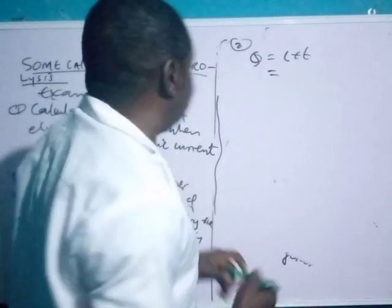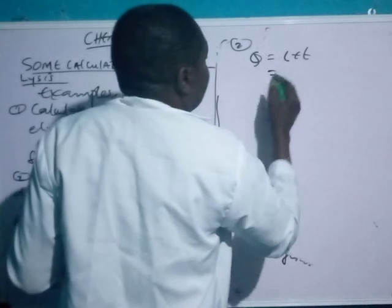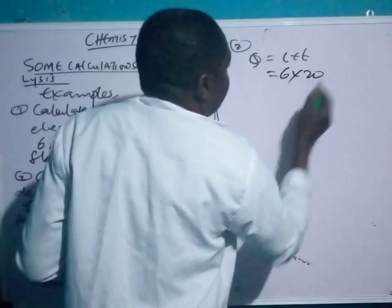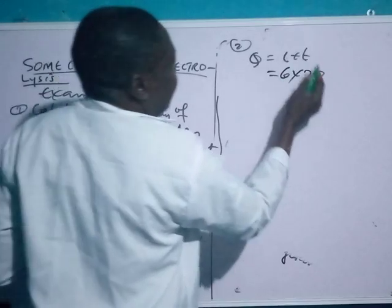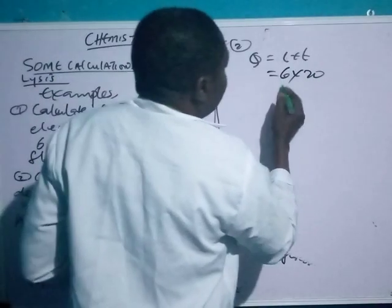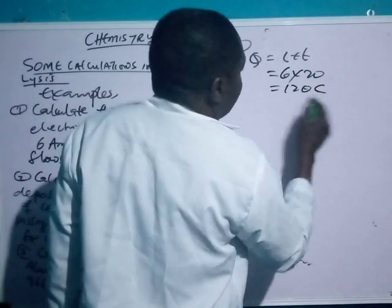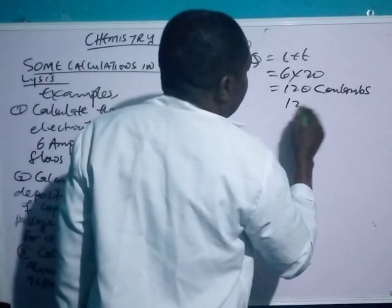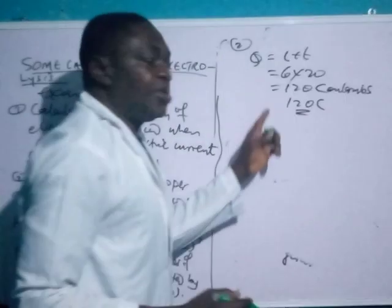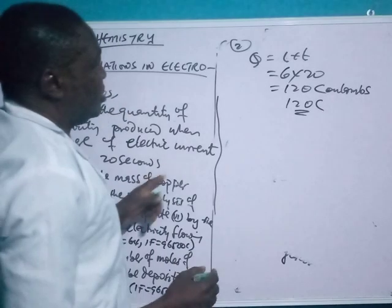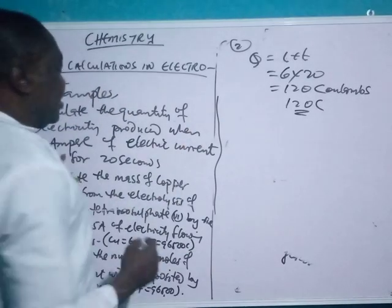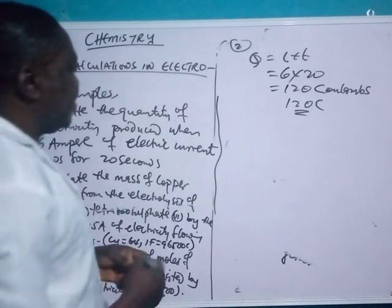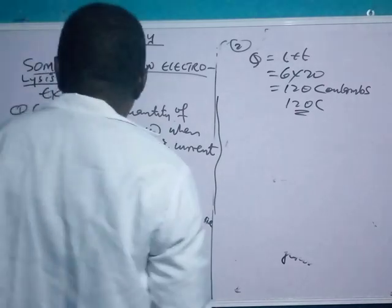In chemistry examinations they always require correct substitution. We substitute: Q = 6 × 20, which gives us 120 Coulombs. So 120 C is the quantity of electricity produced when 6 amperes of electric current flows for 20 seconds.